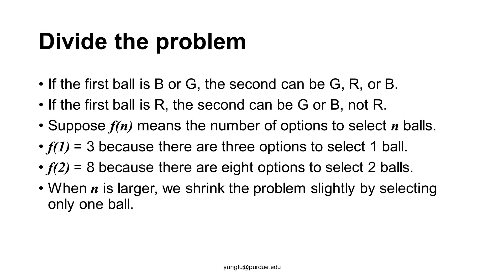How do we solve the problem when N is larger than 2? We can consider the color of only the first ball. If the first ball is blue or green, then there is no restriction on the second ball — the second ball can be red, blue, or green. If the first ball is red, then the second ball can be green or blue, but not red.